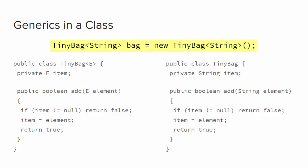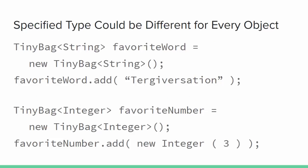When the constructor of this tiny bag example is called, you can imagine that all of the generic E's in the new object are replaced by the specified string type. Within the same program, you can have multiple collections with different specified types.